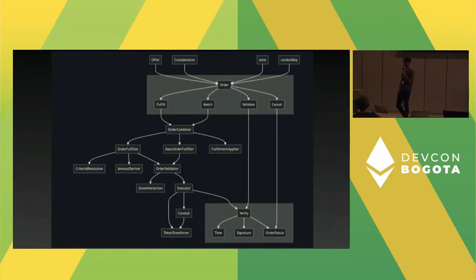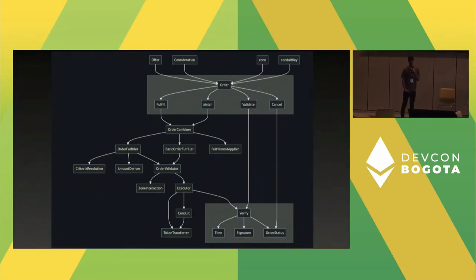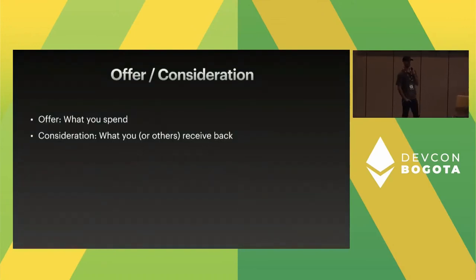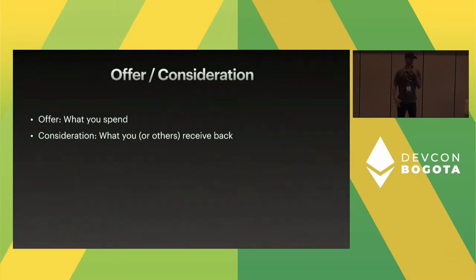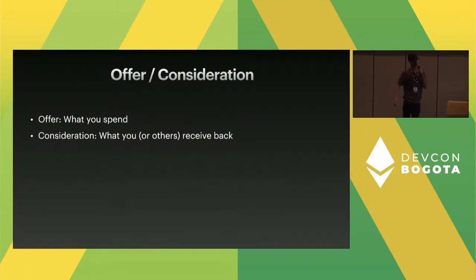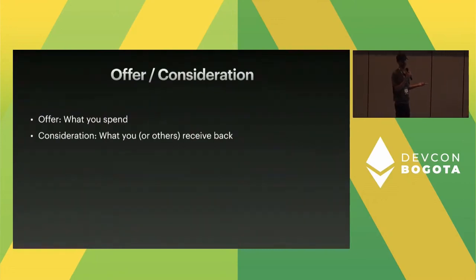Seaport is a beast. It's a single contract but there's a lot going on. First, there are two arrays that dictate the basics of a Seaport listing or offer. The first is the offer — all of the items, native tokens, ERC-20, ERC-721, and ERC-1155 that you the offerer are going to spend. On the other end you have the consideration, which is everything that you or others are going to get back. If you want to spend the offer items, you have to fulfill the consideration.